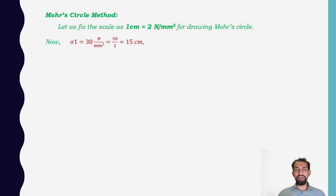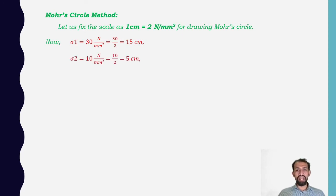We need to change the scale to 1 cm = 2 N/mm². With this revised scale, sigma2 = 10 ÷ 2 = 5 centimeters, and shear stress tau = 10 ÷ 2 = 5 centimeters. Now let us begin to draw the Mohr circle.